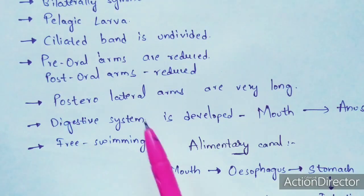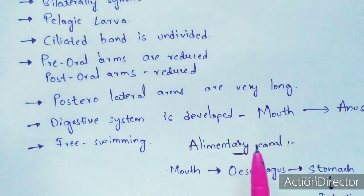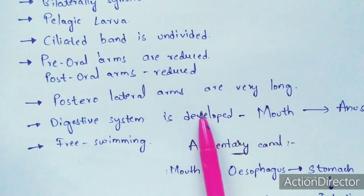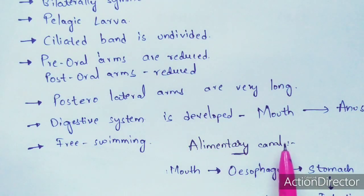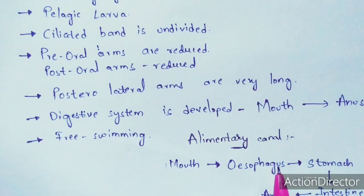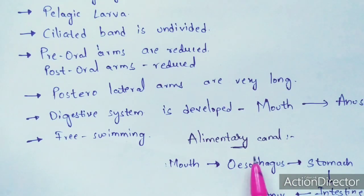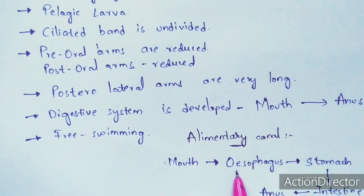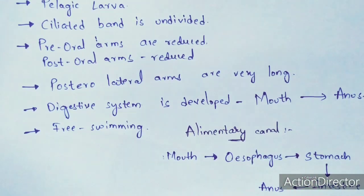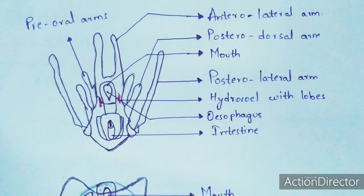The alimentary canal is well developed, starting from the mouth towards the anus. It covers the parts of esophagus, stomach, and intestine. Now let us see the diagram of the ophiopluteus larva.